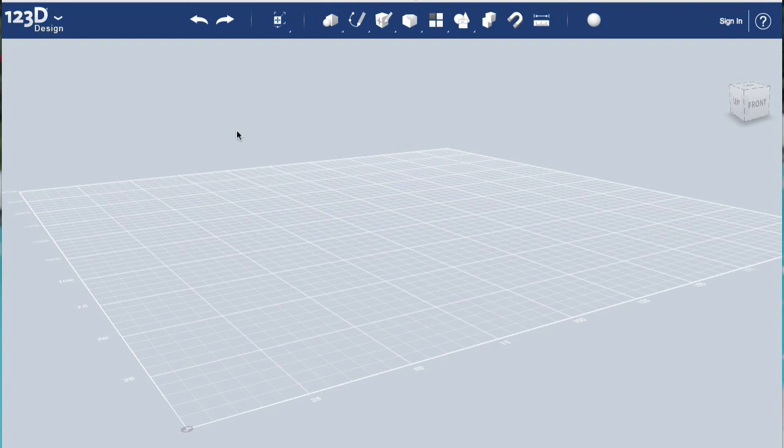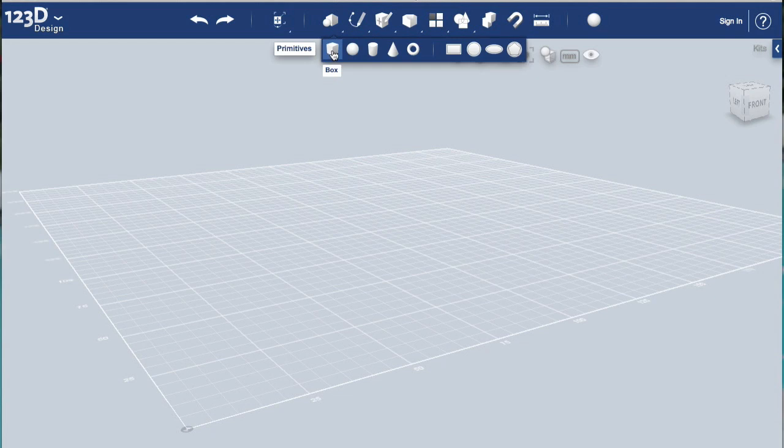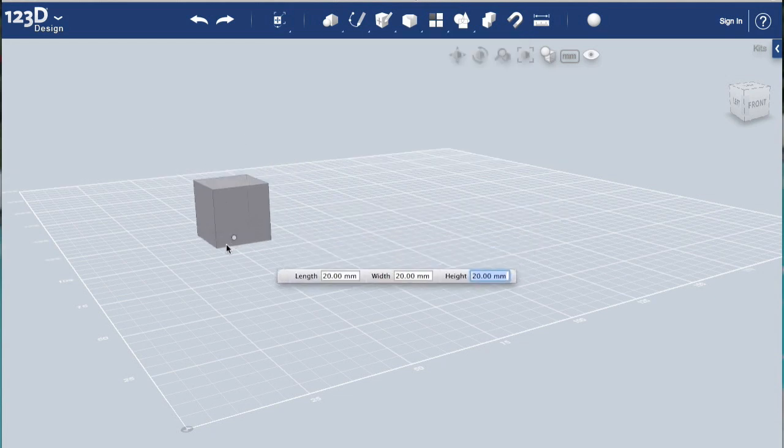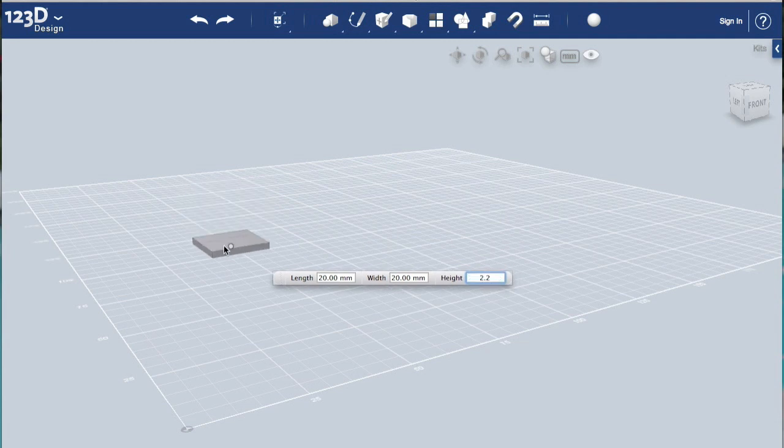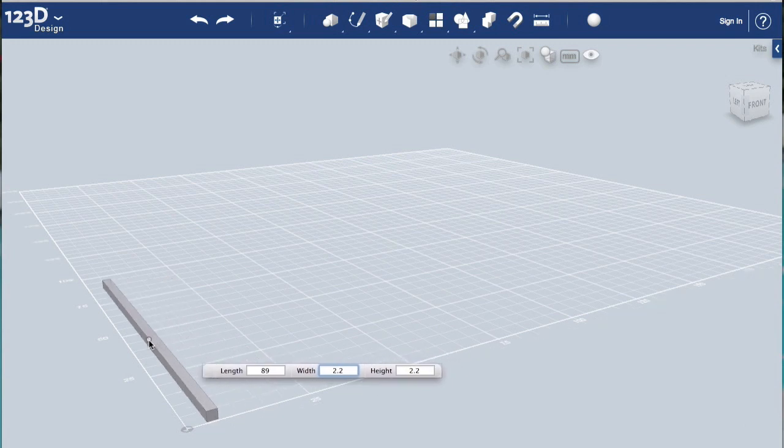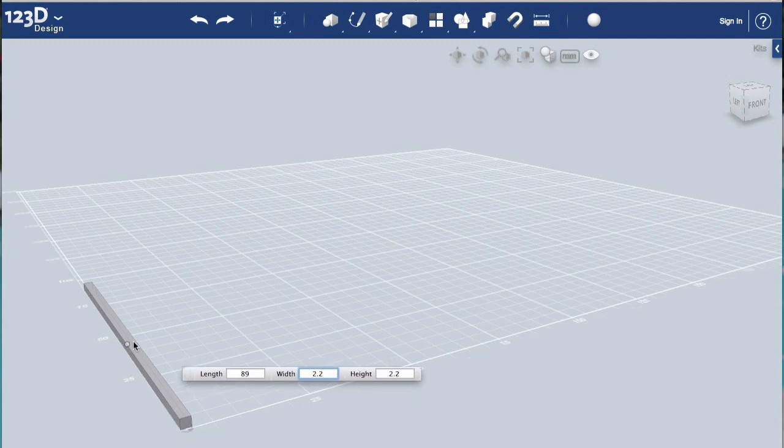We're in Autodesk 123D Design. It's actually a free download, so you should check it out. I've played with quite a few different 3D design programs, and this is probably one of the easiest to get started with. It's right up there with Google SketchUp. What we're going to do is, if you recall, I had the calipers. I measured the Blade MQX arm. We're just going to create a box, and that box is actually going to be 2.2 millimeters high, 89 millimeters long, and then 2.2 for the width. So it's actually a rectangular arm. We're going to get it zeroed in, and then we'll hit Enter.